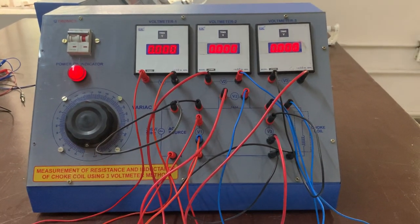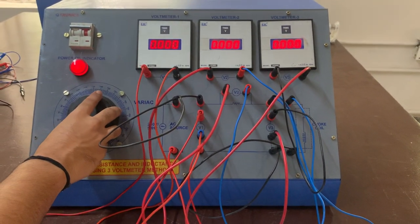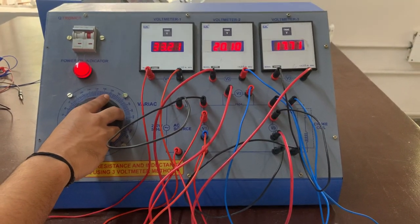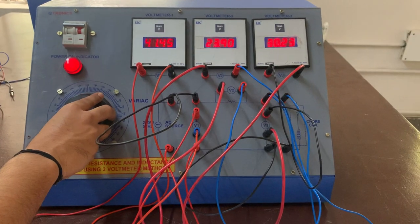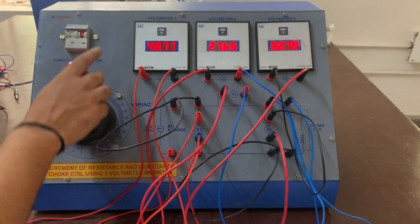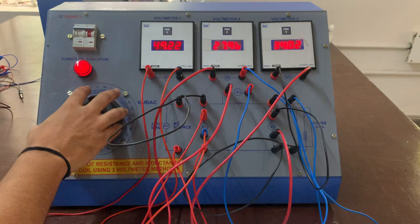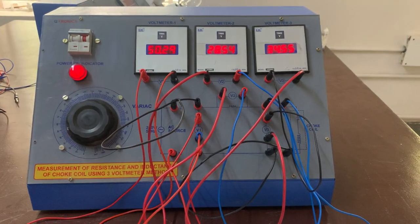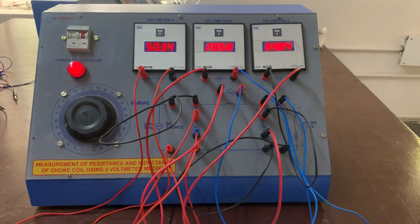Now we'll provide variable voltages here. Using this, you'll set the voltage to around 50 volts. You'll vary this and check the voltage in V1. Yes, now we're approximately at 50. We'll note down this first reading.